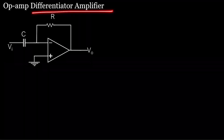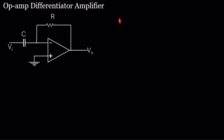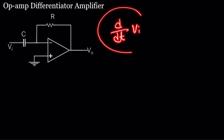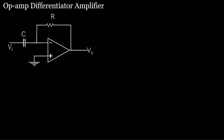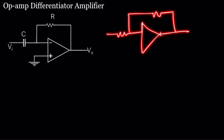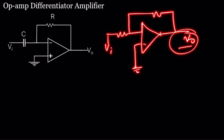Today our focus will be on the differentiator amplifier using an op amp. As the name suggests, this circuit will perform the differentiation of the input voltage. We will construct it using an op amp, a resistor, a capacitor. In my previous video I already demonstrated the op amp circuit with only resistance and how to calculate the output voltage. Now we will explore op amp circuits involving capacitors.